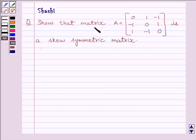The question is: show that matrix A equals [0, 1, -1; -1, 0, 1; 1, -1, 0] is a skew symmetric matrix.